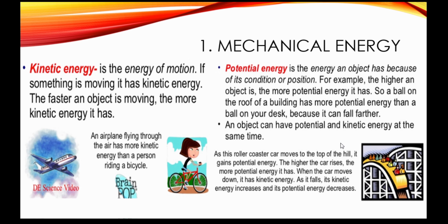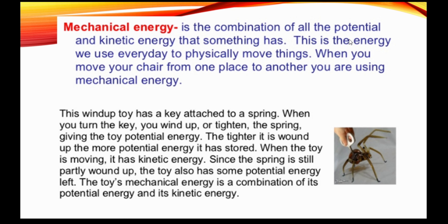An object can have both potential and kinetic energy at the same time. Look at this roller coaster: as the coaster moves up to the top of the hill it gains potential energy — the higher it rises the more potential energy it has. At the top of the hill it has maximum potential energy and zero kinetic energy, because the car stops moving for a few seconds. As it falls, the stored potential energy converts into kinetic energy — potential energy keeps reducing as the car moves to the bottom while kinetic energy keeps increasing. This is how energy transformations happen around us all the time.